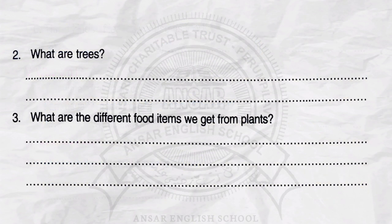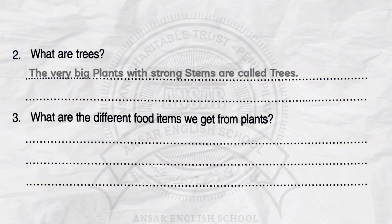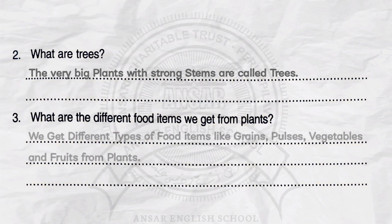Question number 2. What are trees? Answer: The very big plants with strong stems are called trees. Question number 3. What are the different food items we get from plants? Answer: We get different types of food items like grains, pulses, vegetables, and fruits from plants.